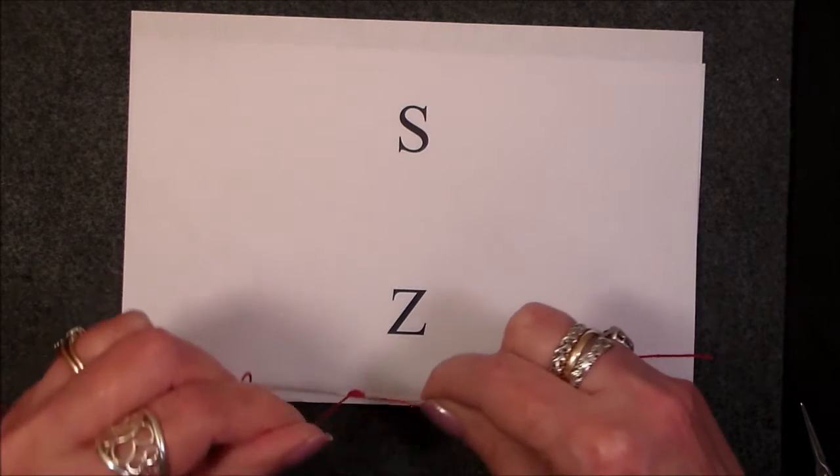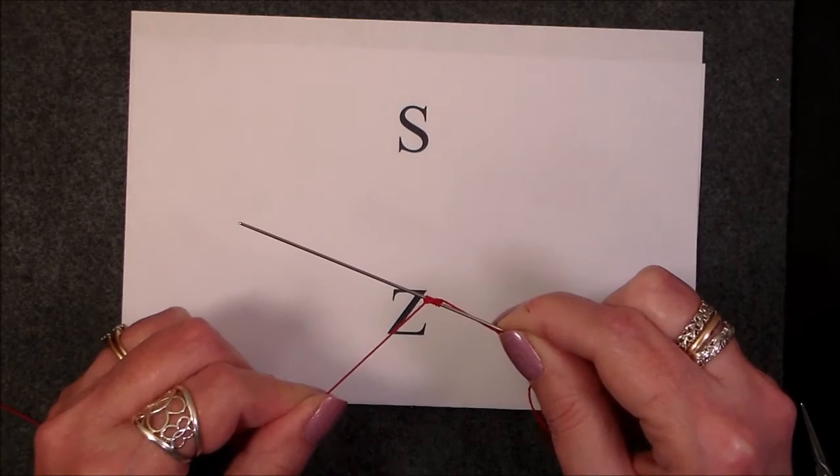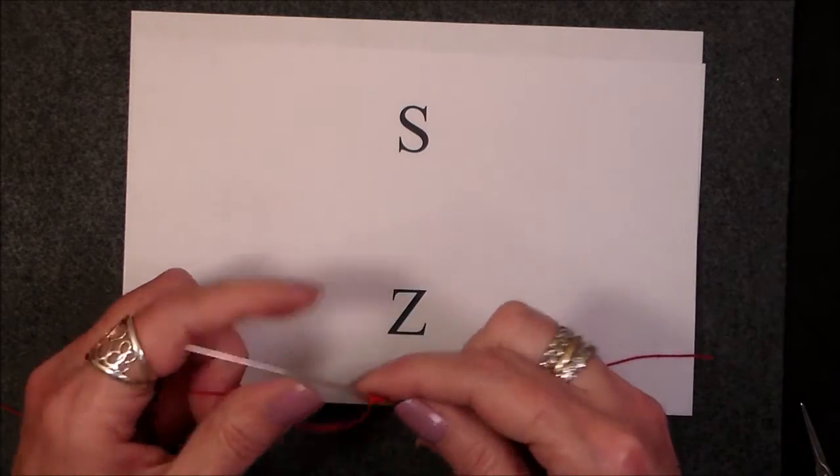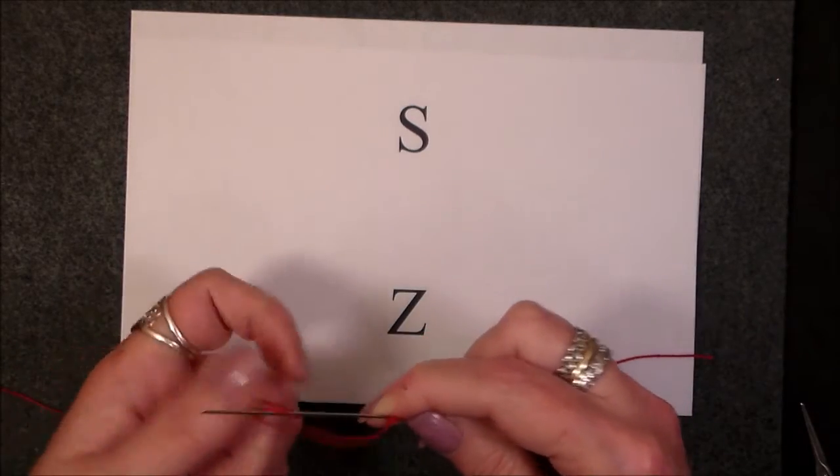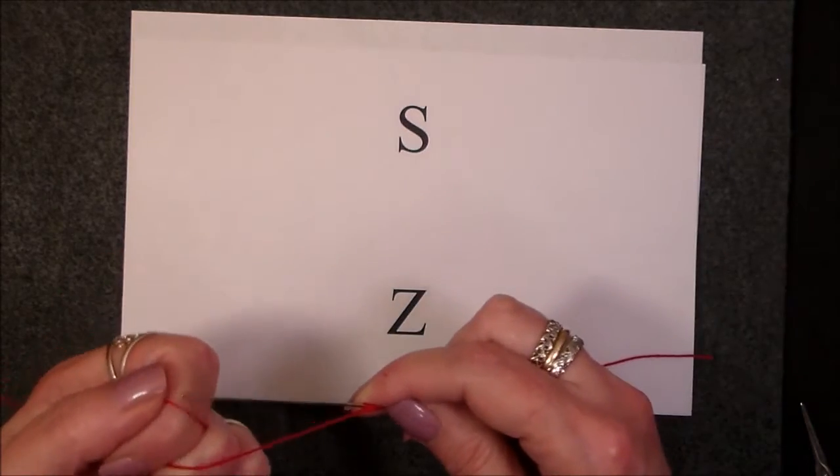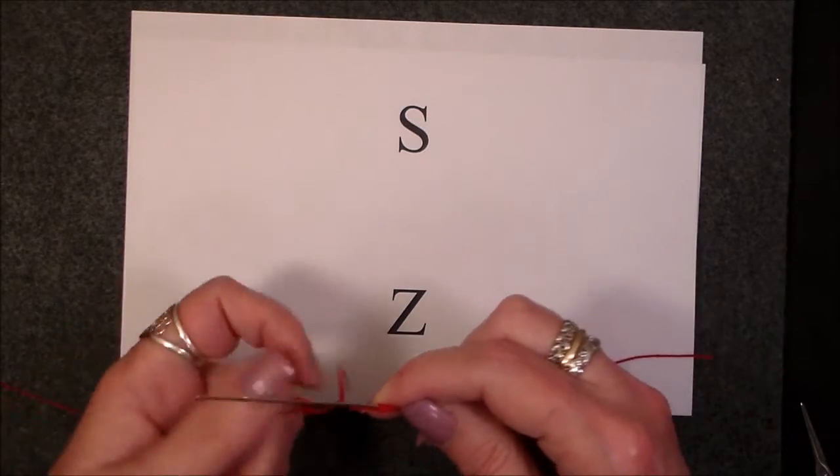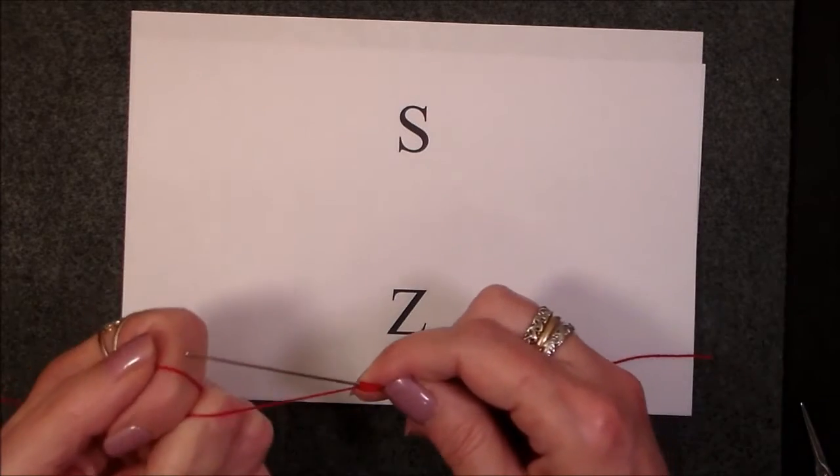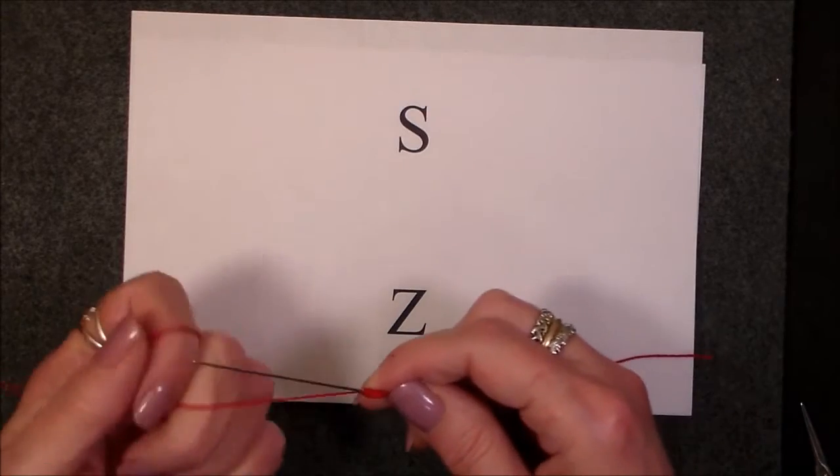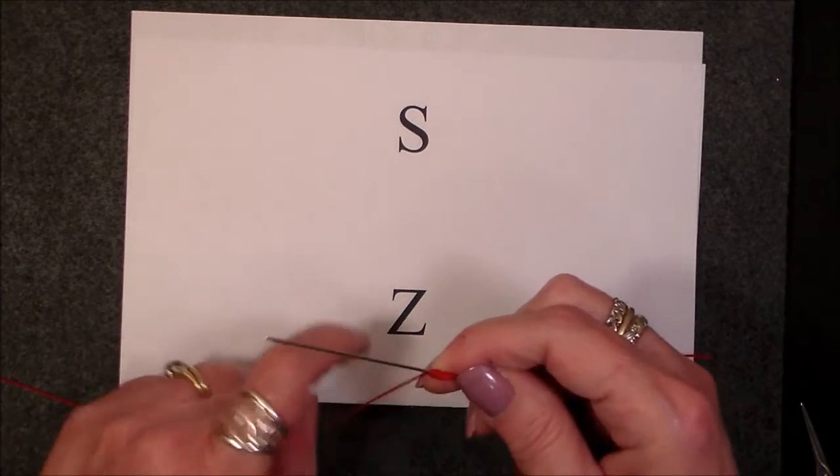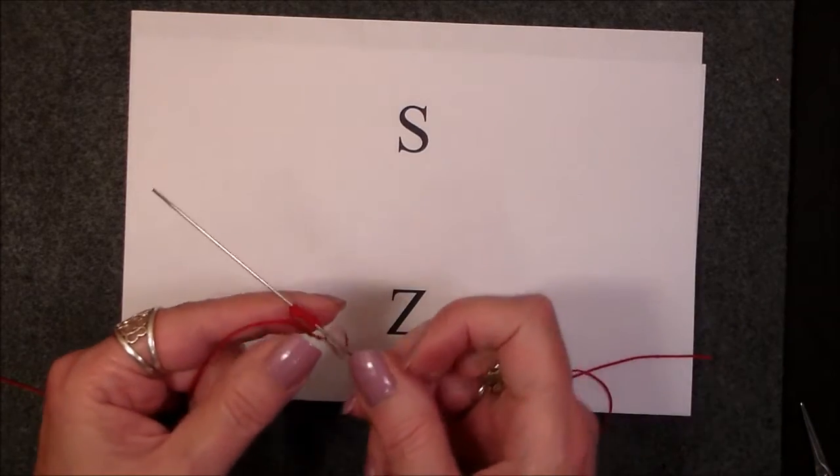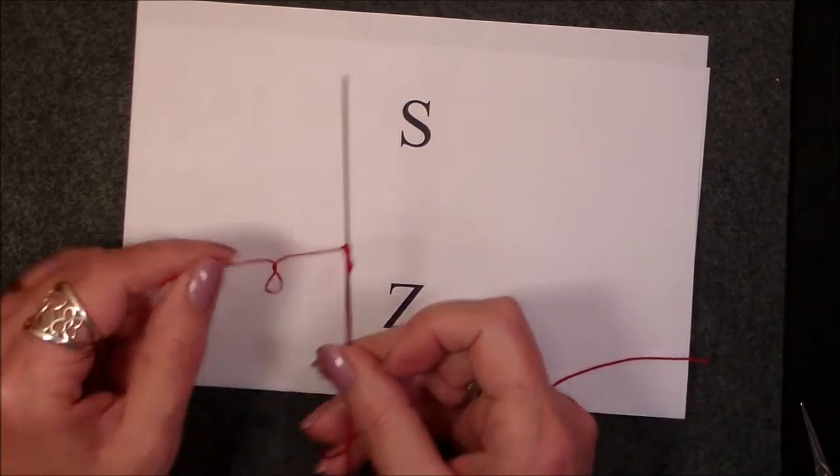So then we're going to take our thread and run it around the needle. Let's do five more. One, two, three, four, and five. And there is our S-Chain. And it's really predominant.